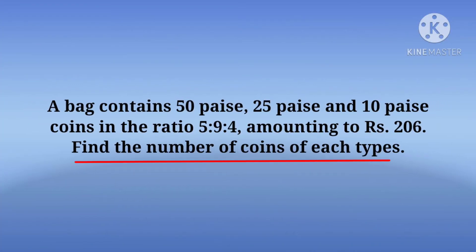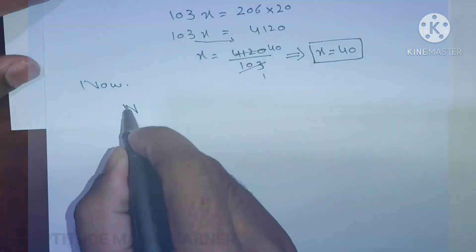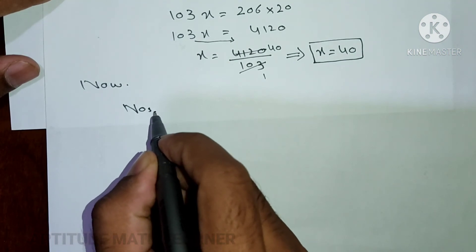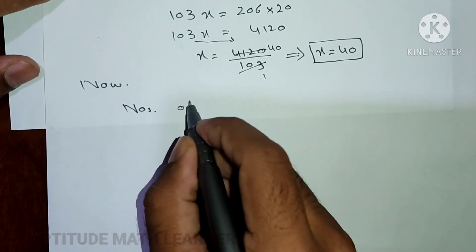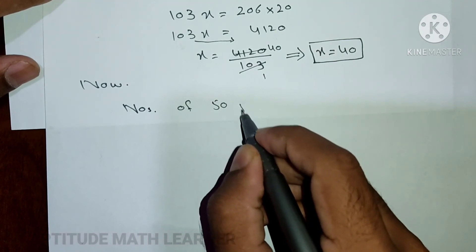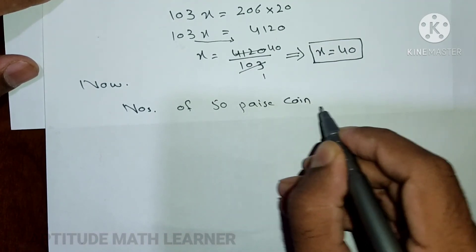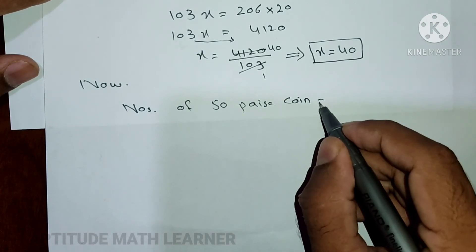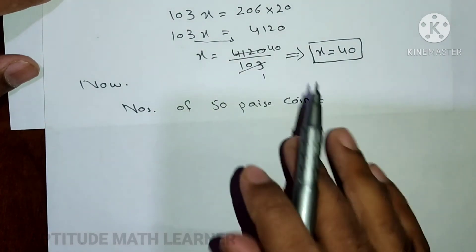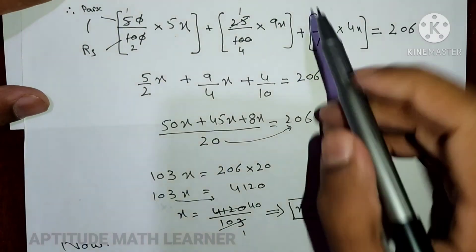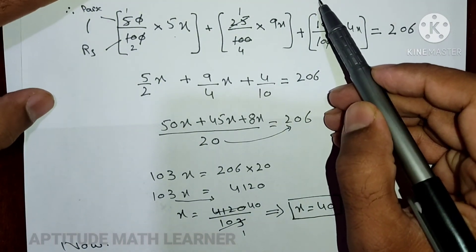Now, the question asks to find the number of coins of each type. Number of 50 paisa coins is equal to 5x.